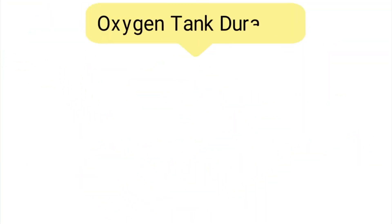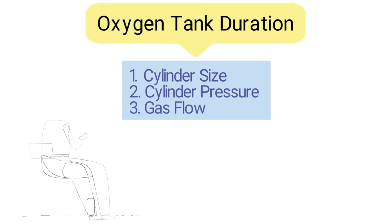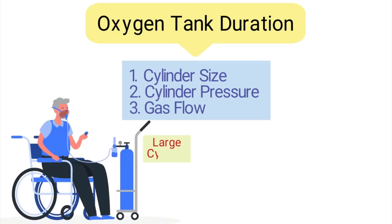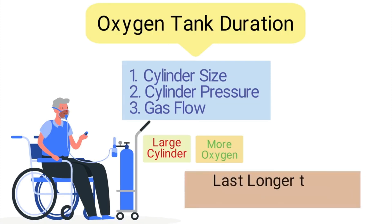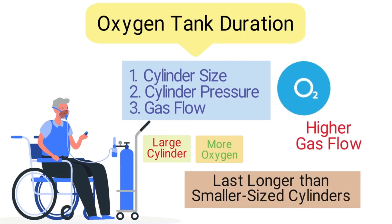In order to calculate the duration of an oxygen tank, you must know the cylinder size, cylinder pressure, and the gas flow. In general, the larger the cylinder is in size, the more oxygen it will hold, which means it will last longer than smaller sized cylinders. Also, the higher the gas flow, the faster the tank will run out of oxygen.